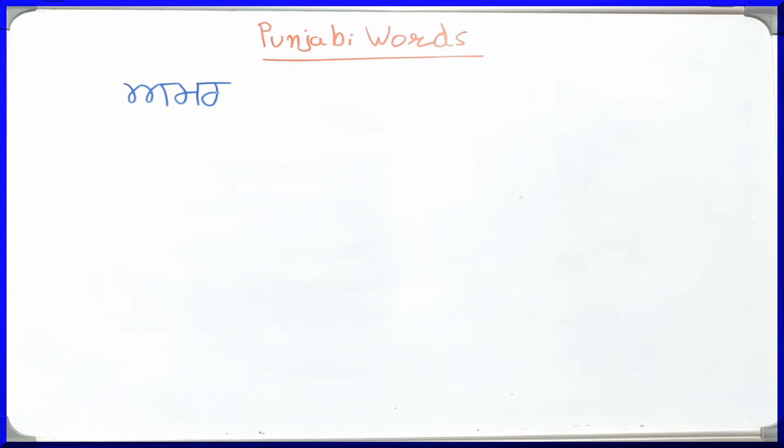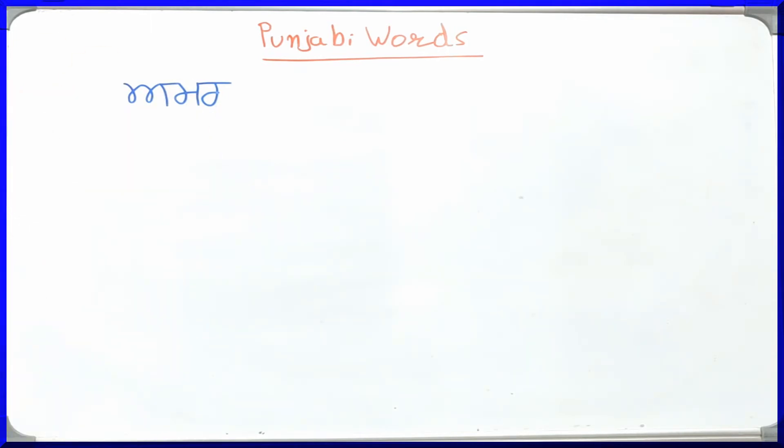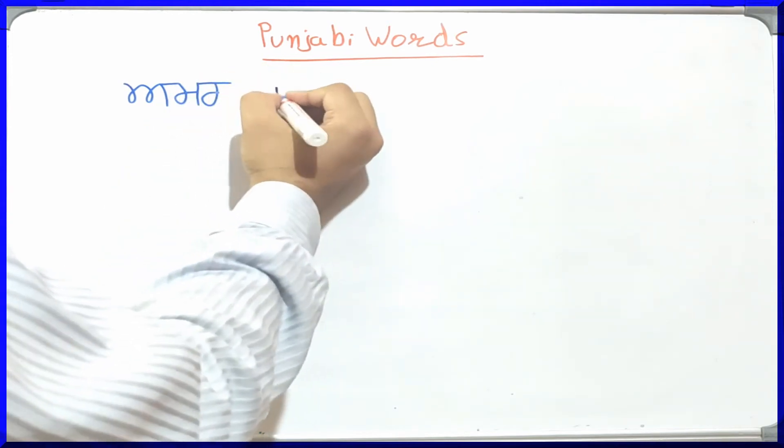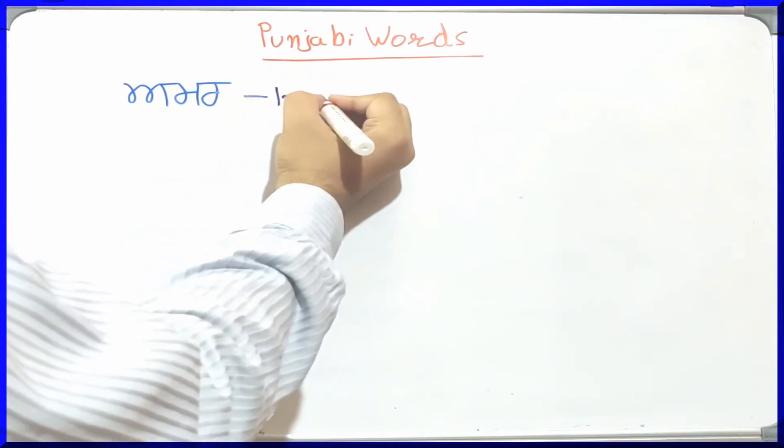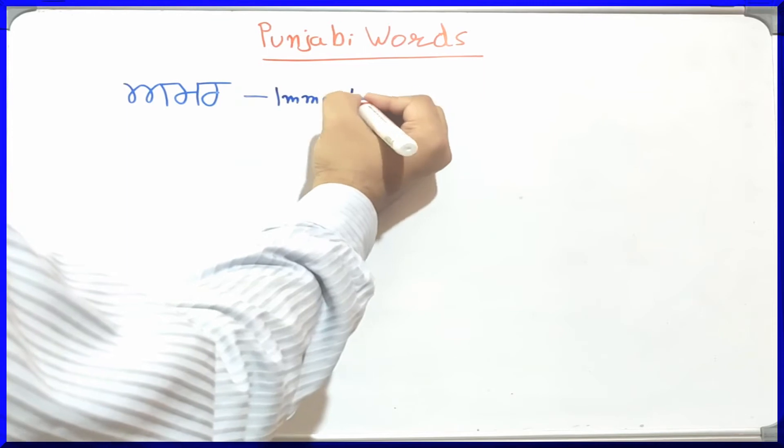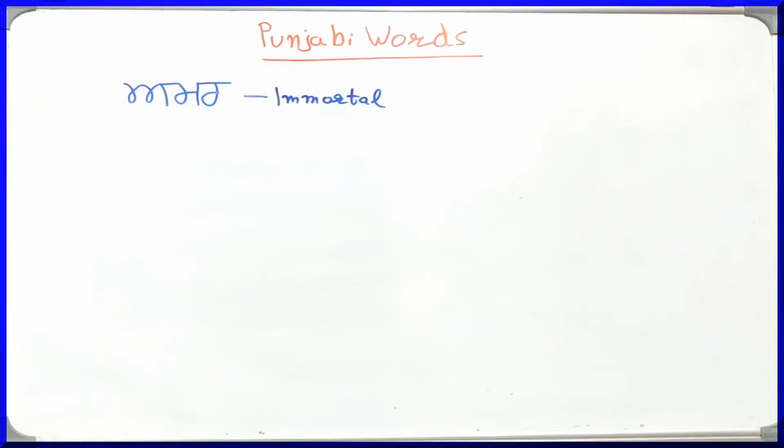Amar. Right? This is Aada. Aada is going to give the sound of A. This is Mamma. Mamma is going to give the sound of M. And this is Rara. Rara is going to give the sound of R. It will become Amar. Amar means Immortal.